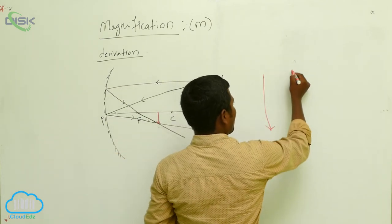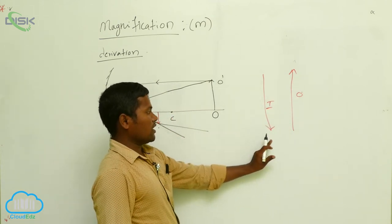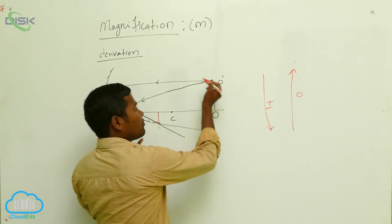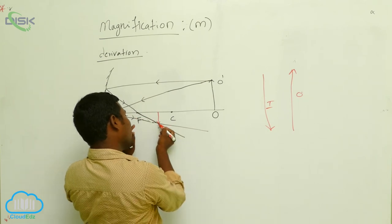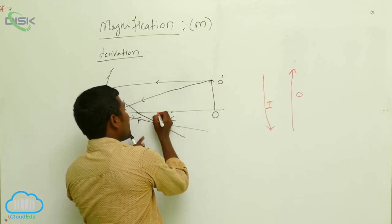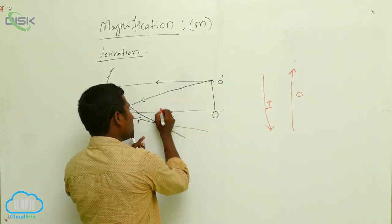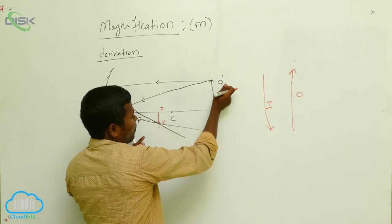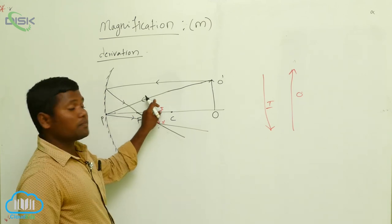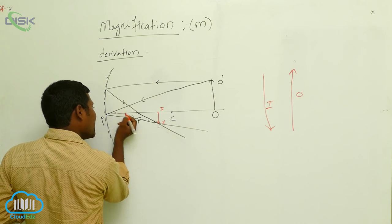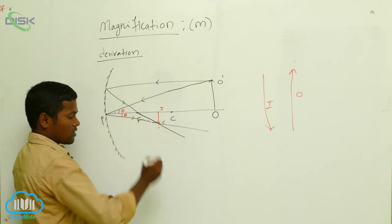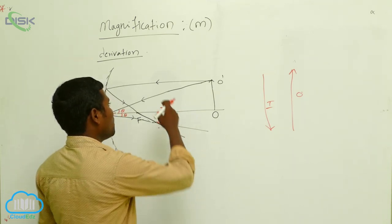Someone may have a doubt about why the image is drawn this way. The object has an upward arrow mark and the image has a downward arrow mark — the image is inverted. The rays from O-dash meet at the image point, and whatever shape the object has, the same shape appears as the image. So the image is labeled I and I-dash, just as the object is O and O-dash. The incident ray and the principal axis make angle theta, and from the law of reflection, the angle of incidence equals the angle of reflection.